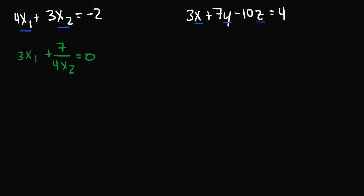So if we had an equation such as 3x₁ + 7/(4x₂) = 0, this equation would not be linear because you could rewrite this equation as 3x₁ + (7/4)x₂⁻¹ = 0. So here we have a problem.